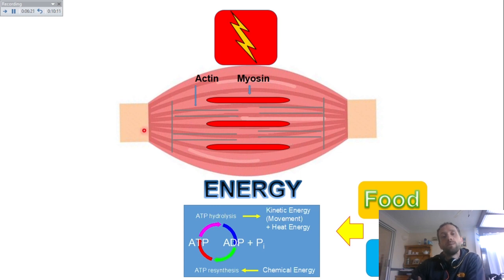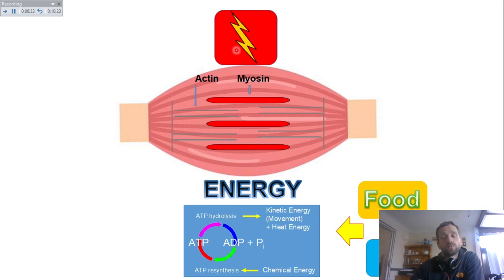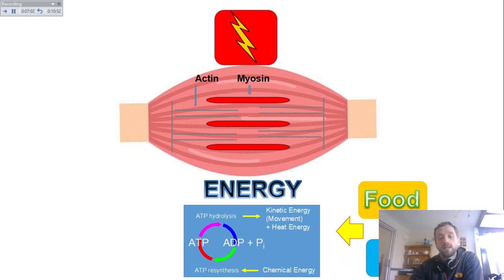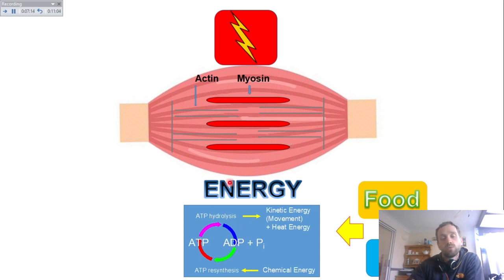Looking at it the other way: if someone has an inability to exercise at a chronic level, that tells us somewhere in this system it's not working properly. It could be a neuromuscular disease affecting the stimulus, or an issue delivering food — I work with glycogen storage disease, where patients can't break down glycogen so they have exercise intolerance. But many common diseases, like COPD or heart disease, are often due to an inability to deliver oxygen to the muscle to allow it to combust with food to resynthesize ATP.